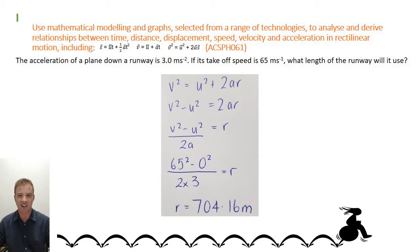And you get 65 squared minus zero squared (because the plane was stationary at the beginning so its initial velocity was zero) divided by 2 times acceleration, which is 3 meters per second per second given in the question, and that will give you r. Now r is 704.16 meters.